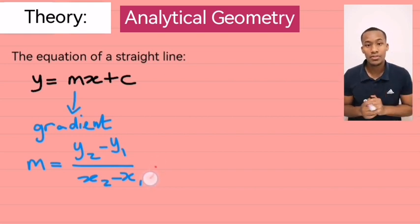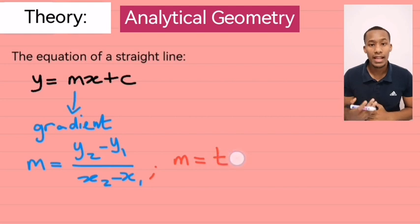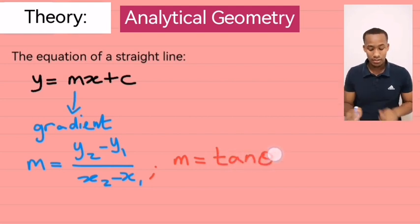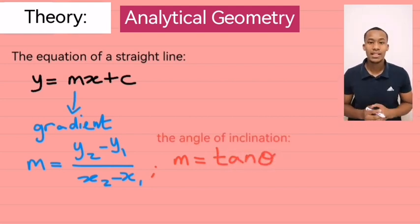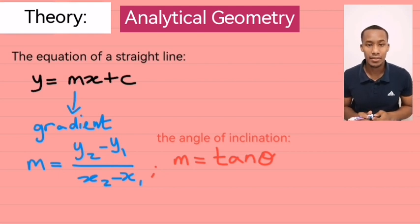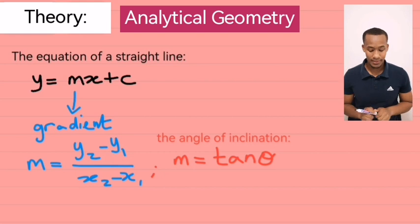But there's a second method to find the gradient of a line. And this is by using the angle of inclination. The formula goes as follows. m equals tan theta, where theta is the angle of inclination.